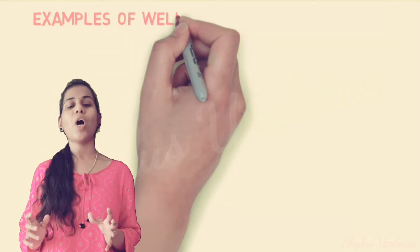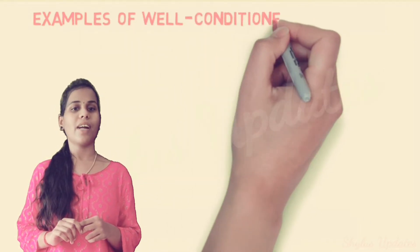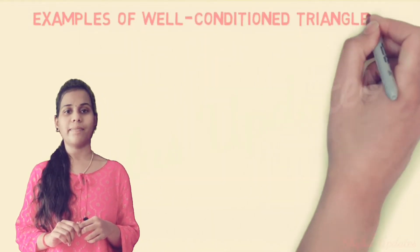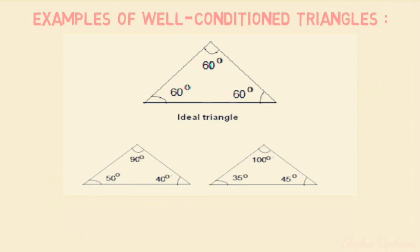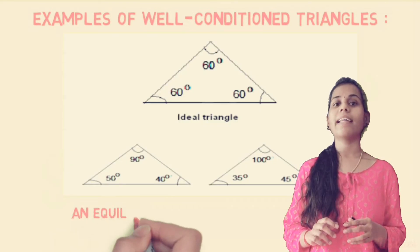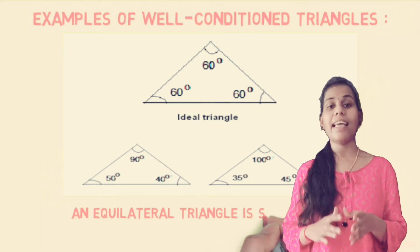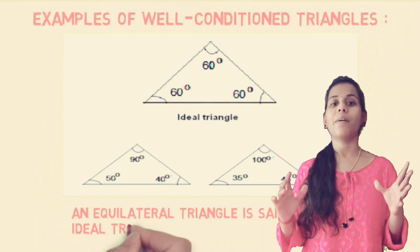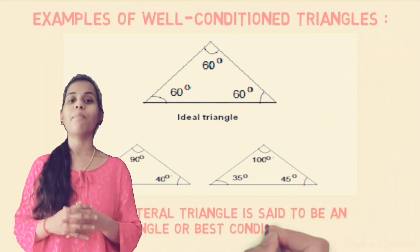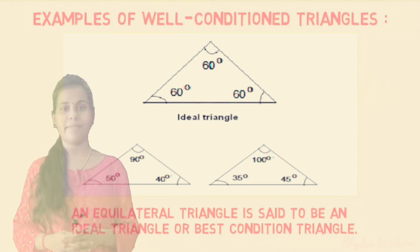Examples of Well-Conditioned Triangle: An equilateral triangle is said to be an ideal triangle or best-conditioned triangle.